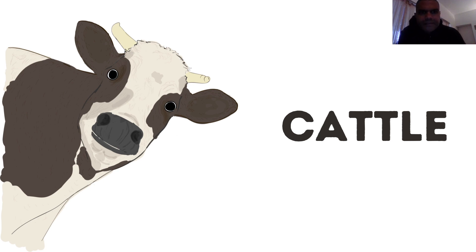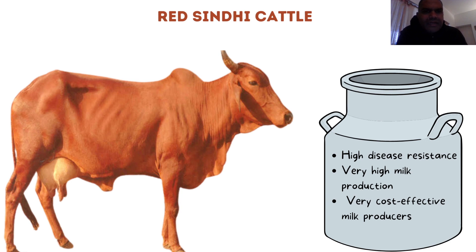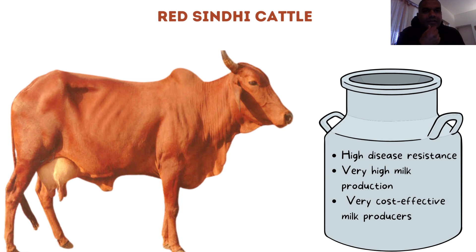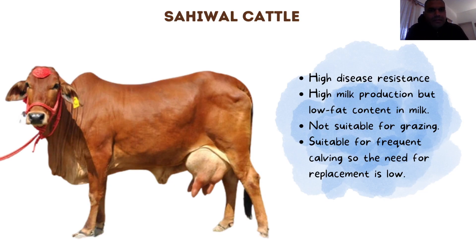We begin with the Red Sindhi, which is a native Indian breed. It is highly resistant to disease, has high milk production, and is very cost effective from the point of view of the production of milk. Let's look at Sahiwal - this is also indigenous, it belongs to India.